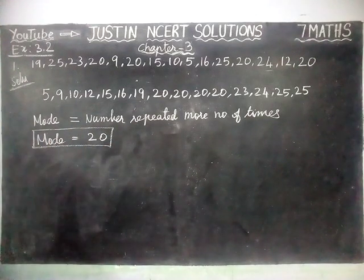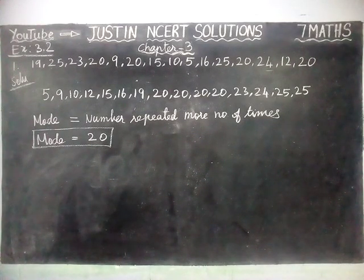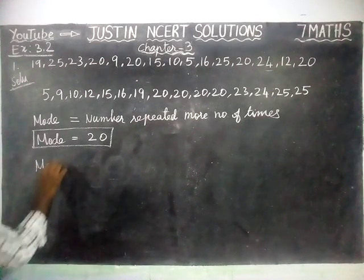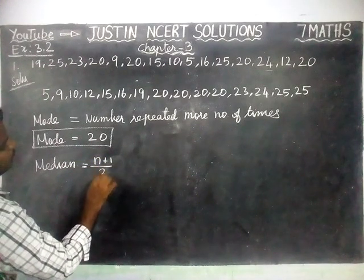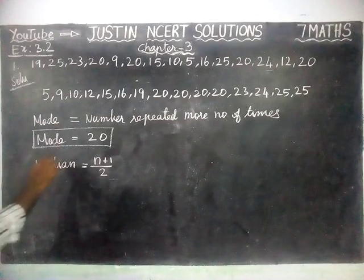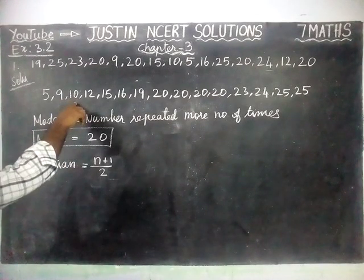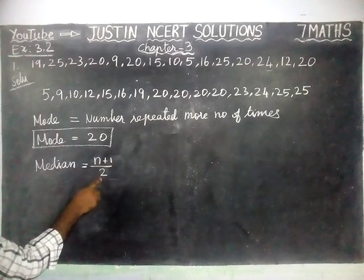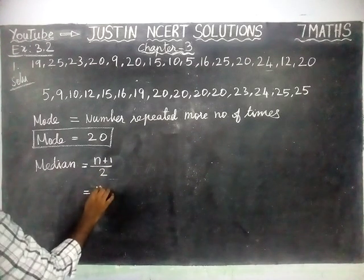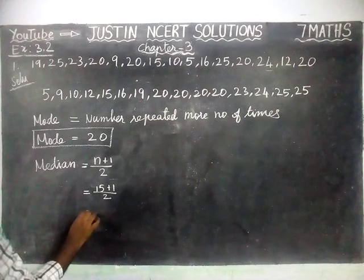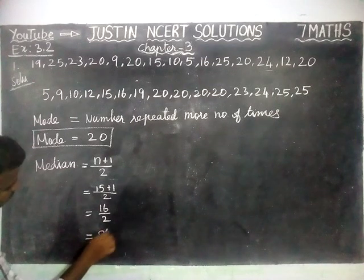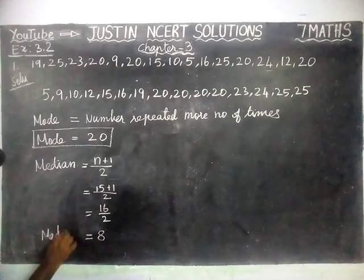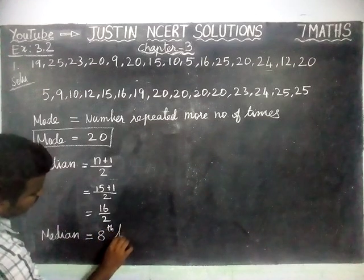Now we are going to find the median of the given data. To find median, if the total number of observations is an odd number, the formula is: median equals the value at position (n+1)/2. Here we have 15 observations. 15 is an odd number, so using the formula: (15+1)/2 = 16/2 = 8. So median is equal to the 8th term.